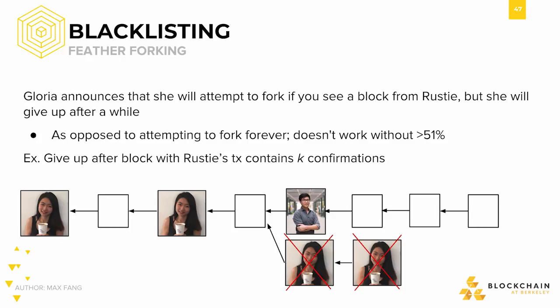She also announces that she would give up after the block containing my transaction has K confirmations. Unlike the attack where one attempts to fork forever — punitive forking — this attack can still work even if you have less than 51% of the mining power.